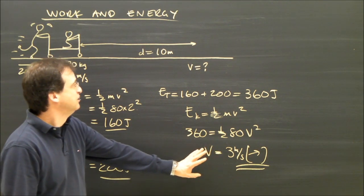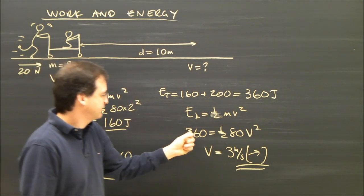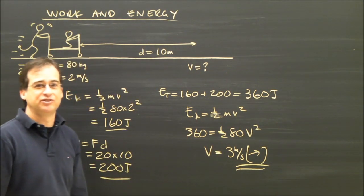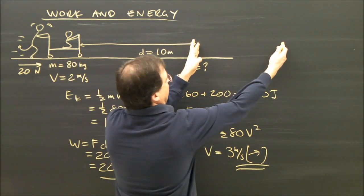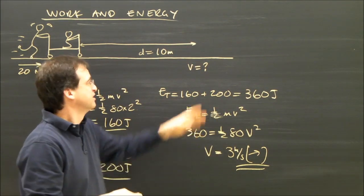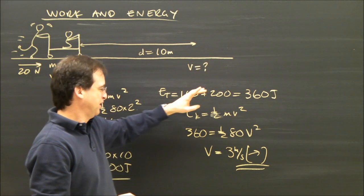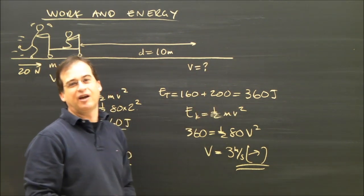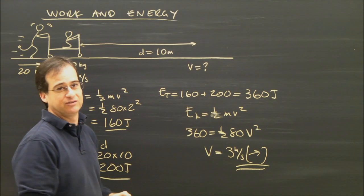Now, if I wanted to stop this cart, it depends what distance. That's how much energy I have, 360 joules. If I want to stop it in 5 meters, then force times 5 meters will equal 360. I can tell you how hard they have to push to stop it in 5 meters.